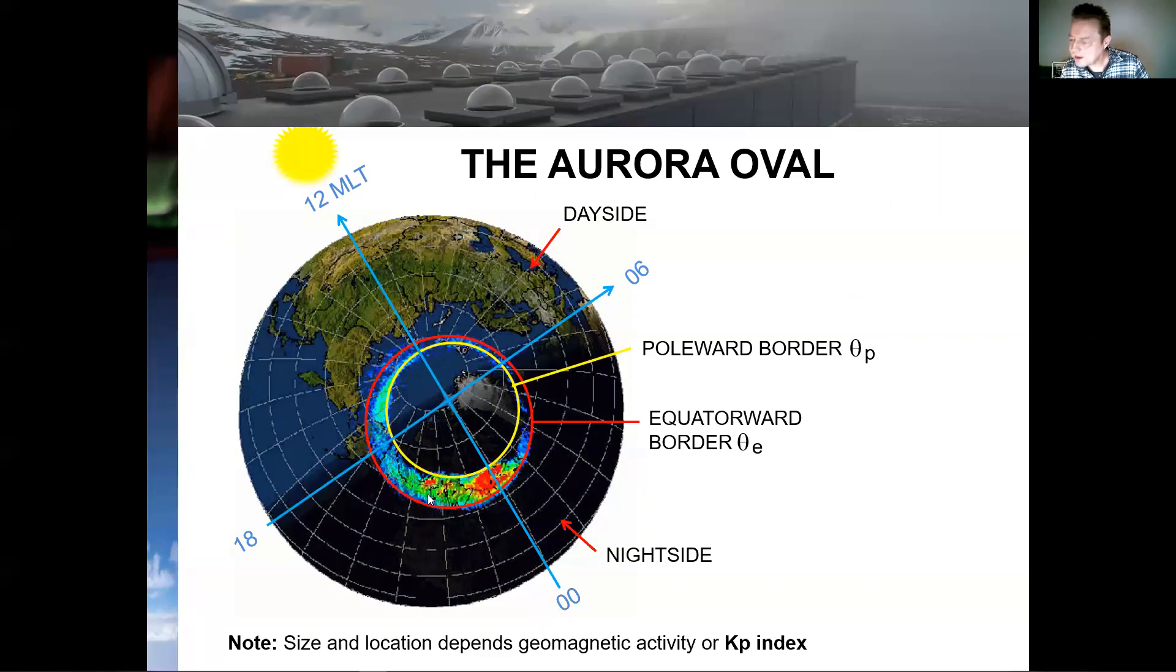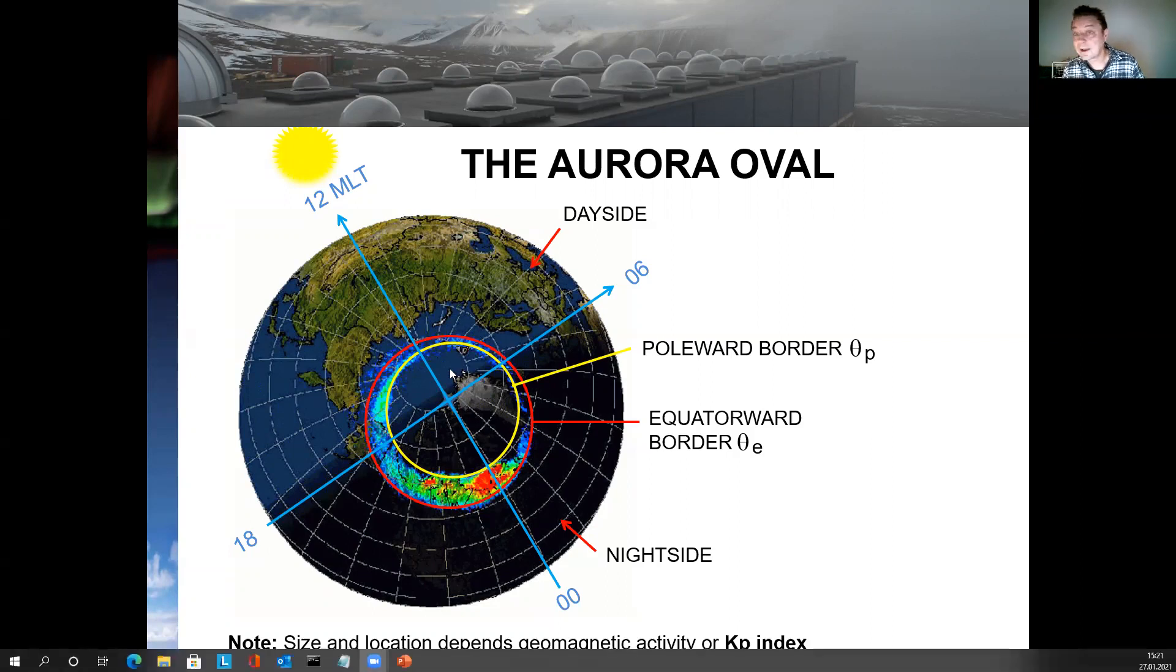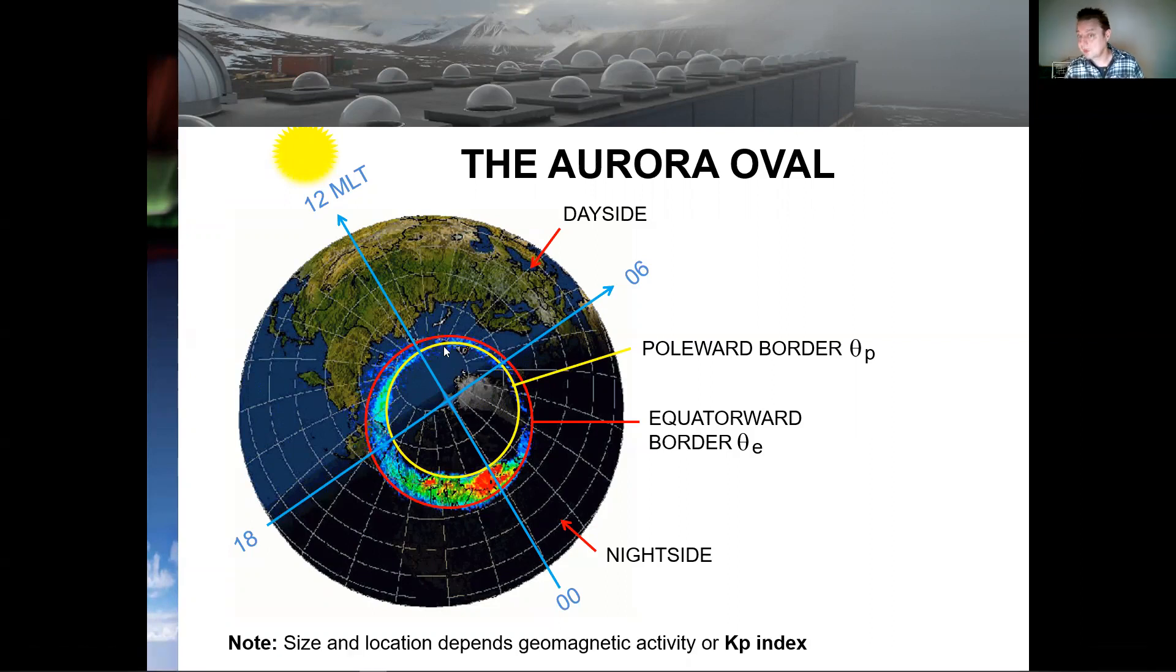The data you see here is from an American NOAA satellite and it clearly defines the poleward border and the equatorward border of the aurora oval. Also notice that Earth is rotating beneath this oval with the center, of course, in the geographical pole, around the geographical pole.